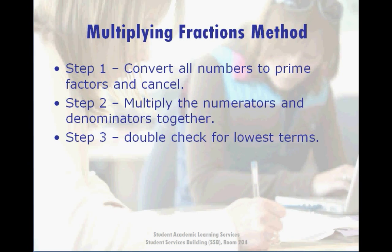In order to multiply fractions together, we're going to follow a three-step method. Step 1 is to convert all numbers to prime factors and then cancel. Step 2, multiply the numerators and denominators together. Step 3, double-check to ensure that we're in lowest terms.